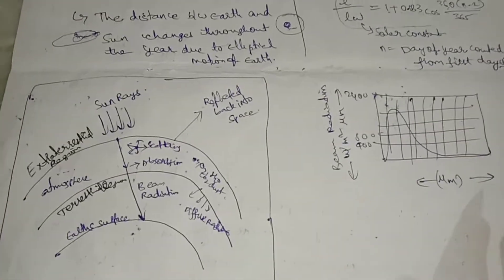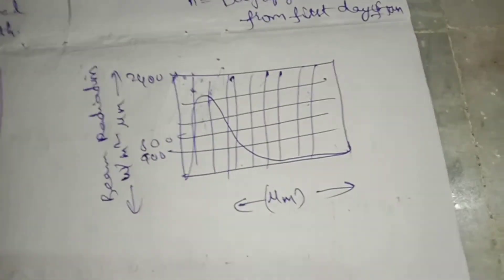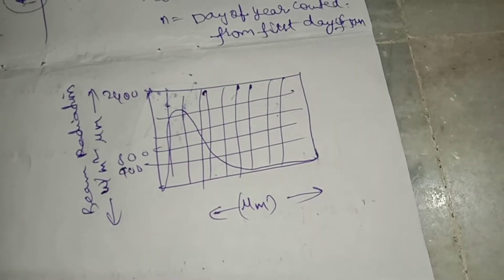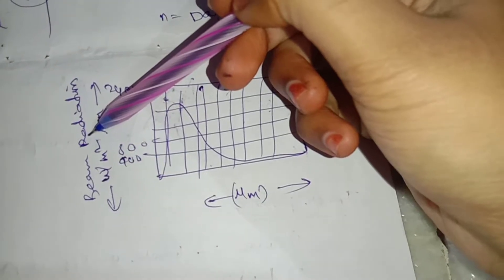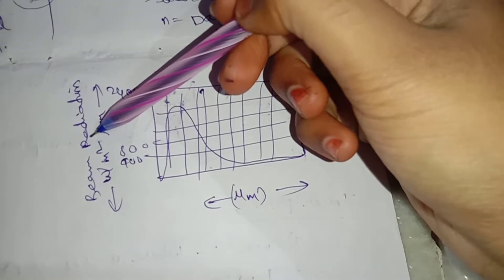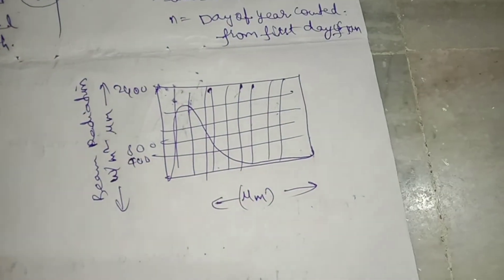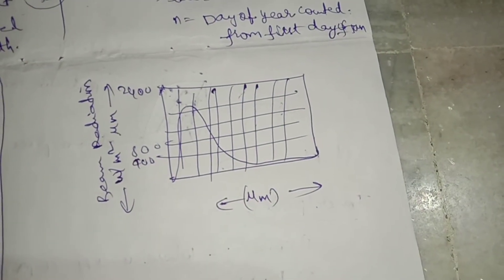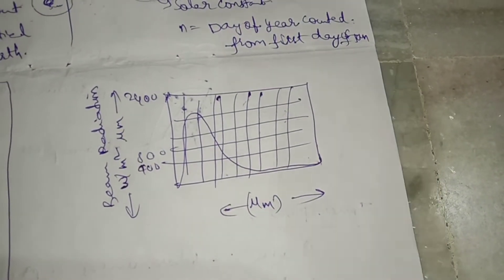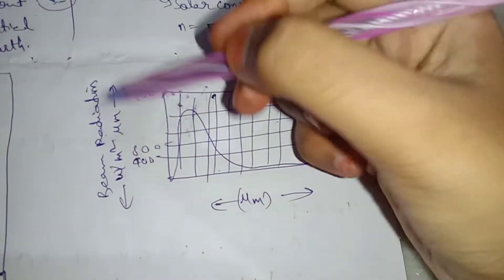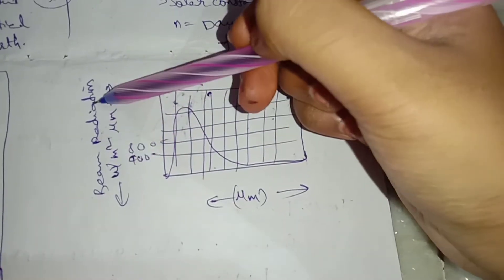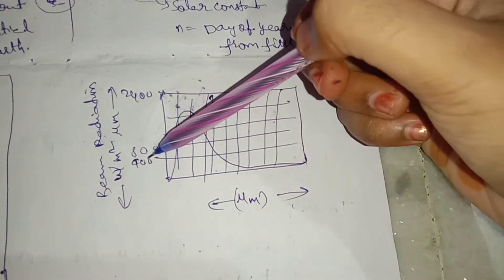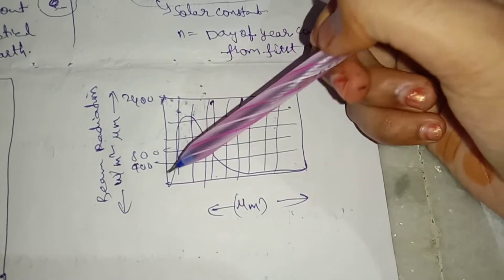Now let's draw two diagrams which define the spectral regions. The first is beam radiation — solar radiation received from the sun without having been scattered by the atmosphere. In extraterrestrial conditions there is no scattering, so this is beam radiation. The wavelength ranges shown are 400, 800, and up to 4400, with different intensity values at each range.